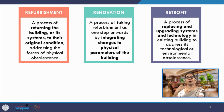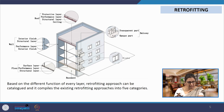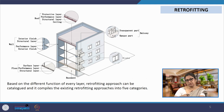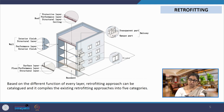When retrofitting we intervene in 5 different possible parameters. One is the roof, where we can make changes in the structural layer, the ceiling beneath it, the performance layer above it, or the protective layer on top. The second is the wall, which could be on the internal side — structural layer and internal finish — or the external side with a performance layer and external finish. For the floor, we have the structural layer, the performance layer, and the surface layer.